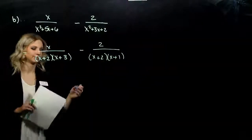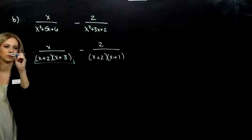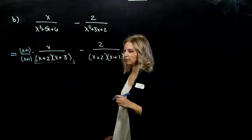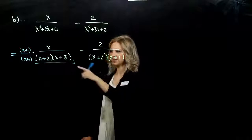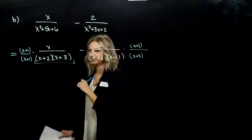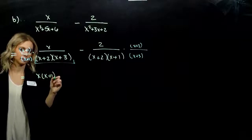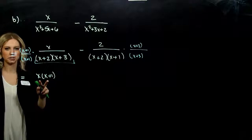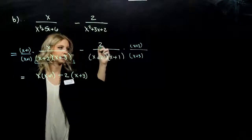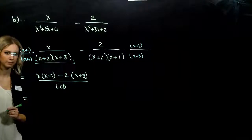Let's start to build. Looking at my first term, what is this one missing that the other one has? A factor of x plus 1 — whatever we do to the bottom, we have to do to the top. And over here, what is this one missing? We went in order 1, 2, 3 — we are missing a factor of x plus 3. Whatever we do to the bottom, we have to do to the top. In my numerator I have x times that quantity x plus 1, and I've got a negative 2 times that quantity x plus 3, all over the LCD — multiplication is commutative so we can change the order.